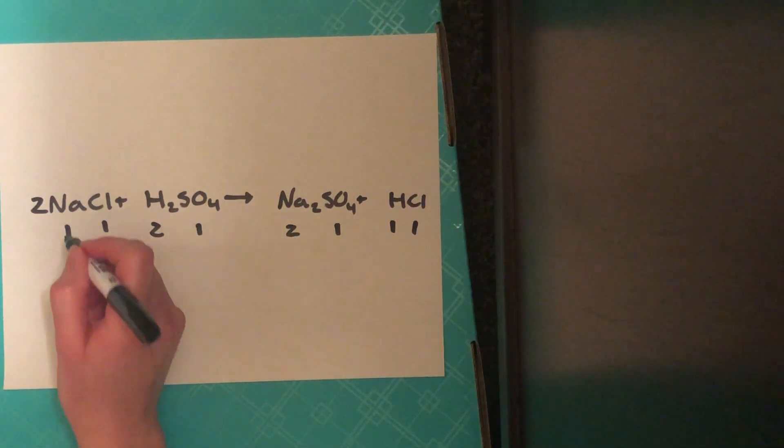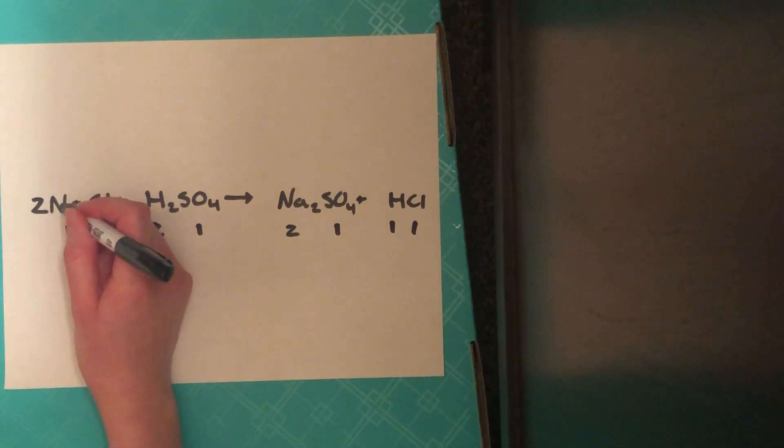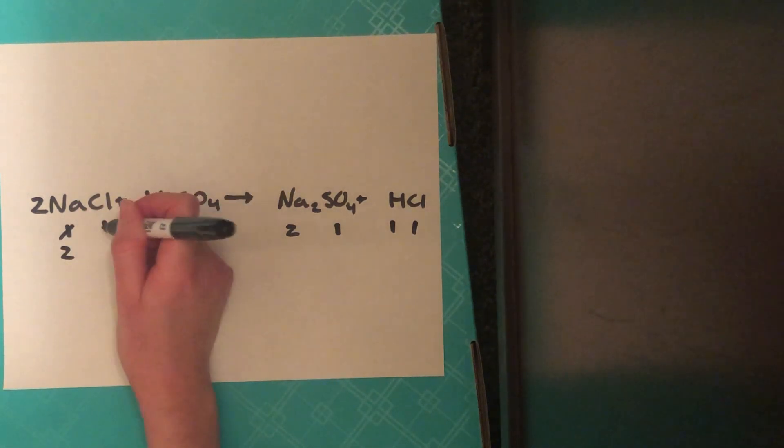We're going to put a coefficient of 2 in front of the sodium chloride. That's going to distribute to both the sodium and the chloride to give us two.